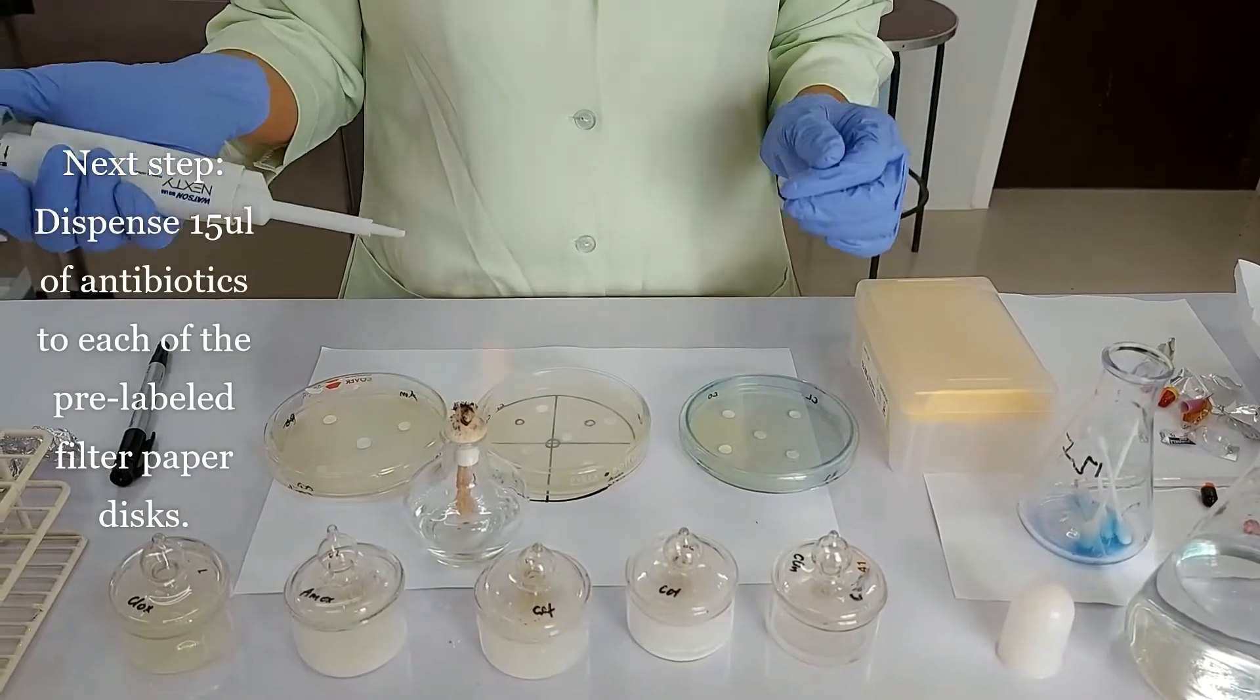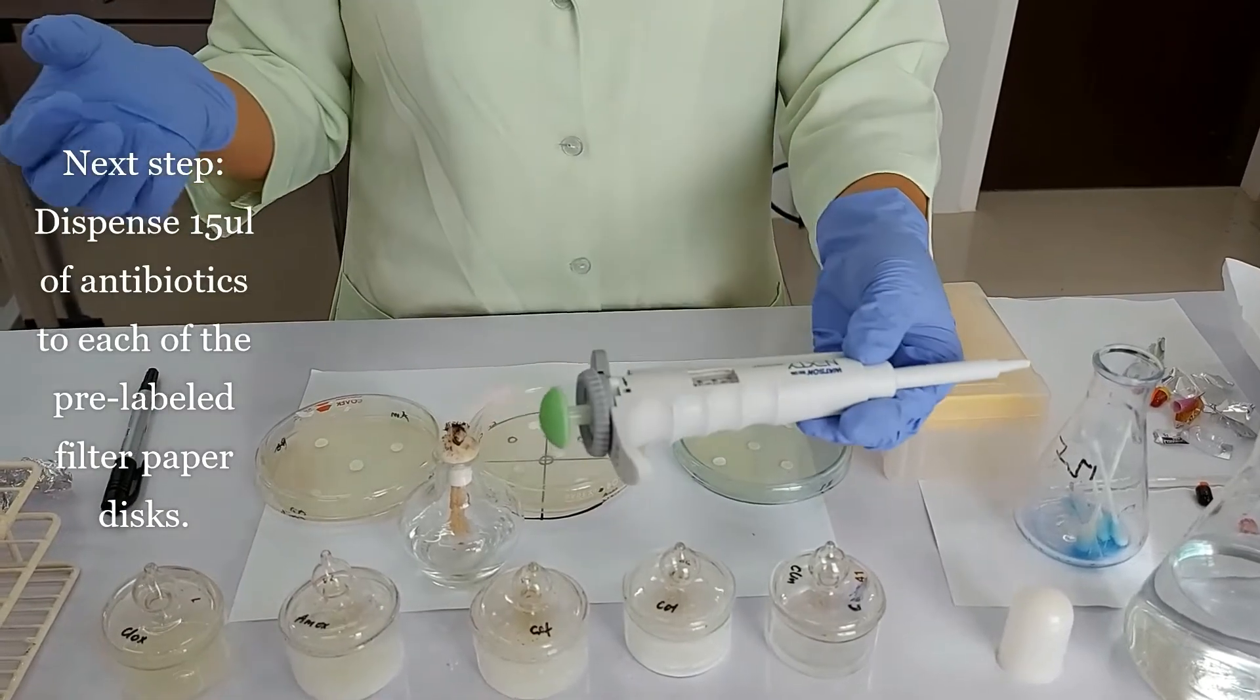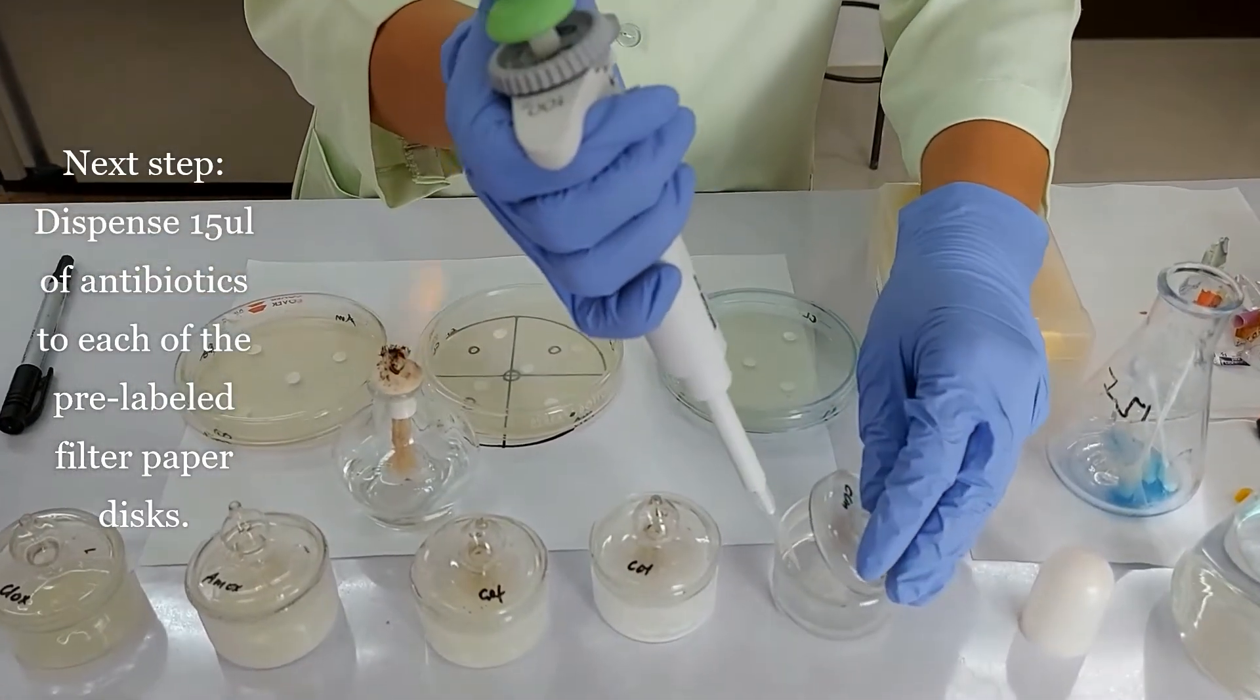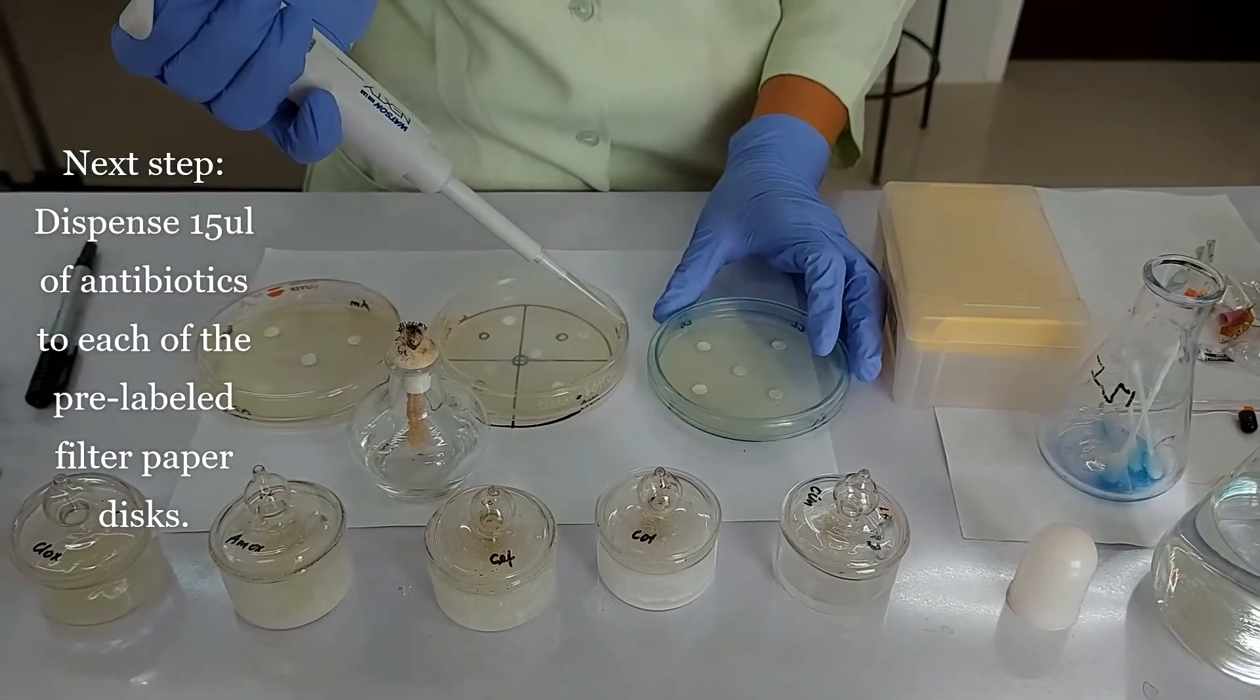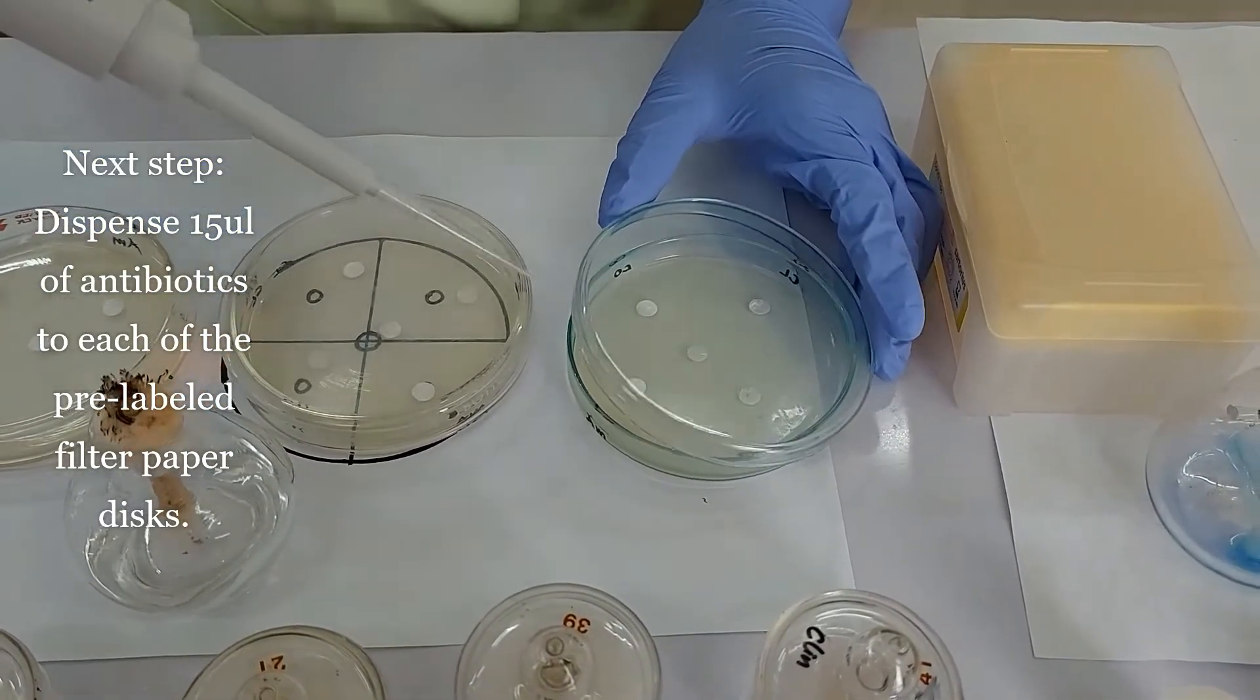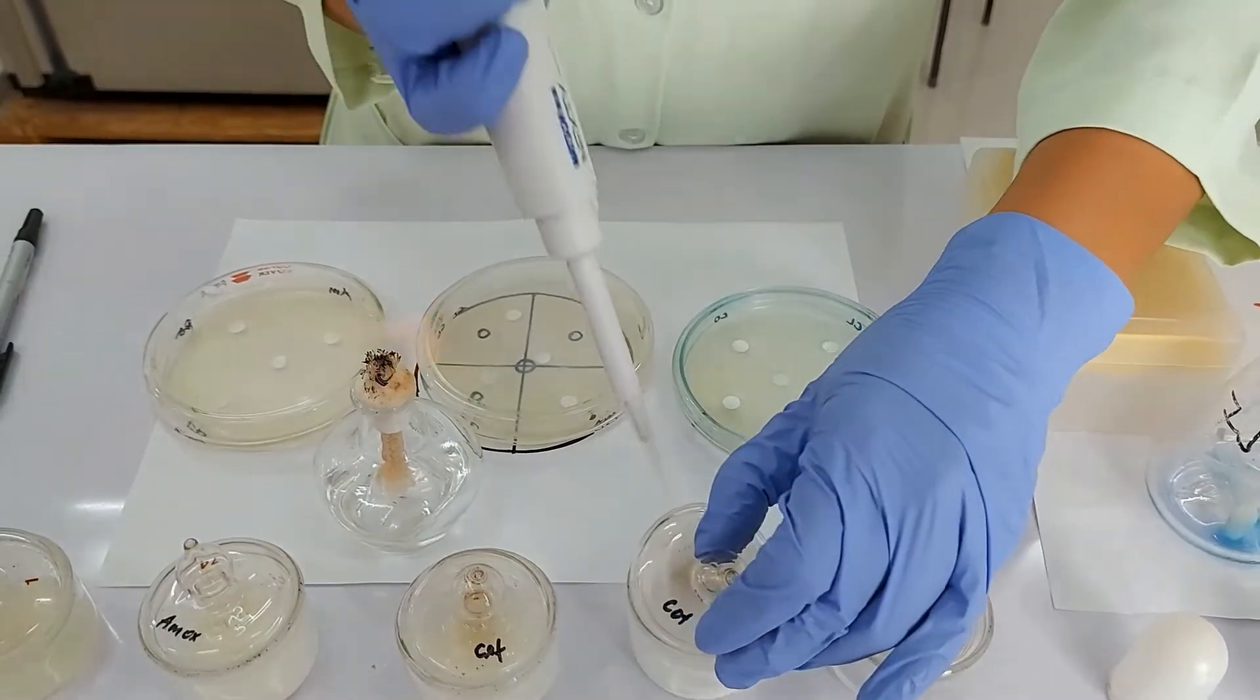The next thing that we are going to do is to dispense antibiotics into each of these designated filter papers. We are going to dispense 15 microliter using this micropipette. I'm going to dispense this at the center, making sure it's not dripping all over the surface of your agar.